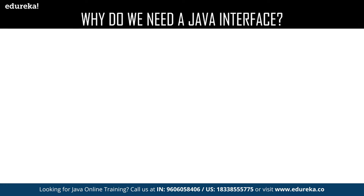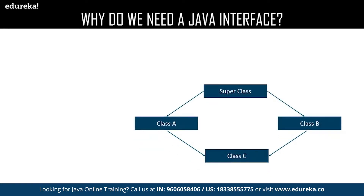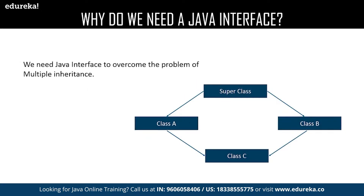We all know that Java supports inheritance, but when it comes to multiple inheritance Java cannot support it. It ends up facing ambiguity between two parent classes and fails to provide the required result. This particular problem is called the diamond problem. There is a super class inherited by two classes, class A and class B, and we are trying to inherit the properties of class A and class B into a new class C, which is practically impossible in Java.